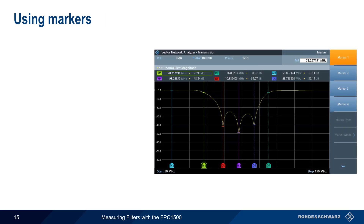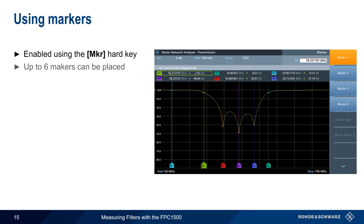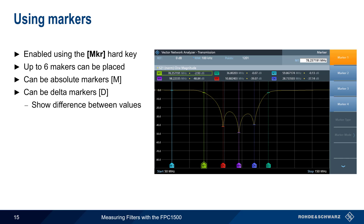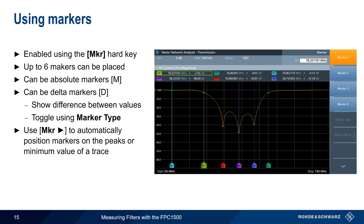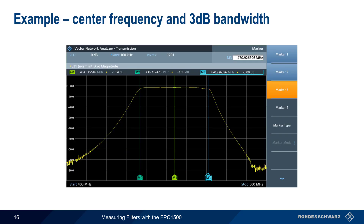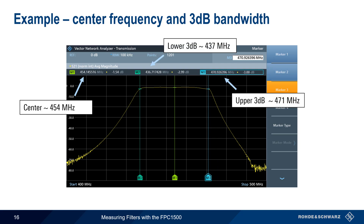Filter characteristics are determined using markers, which are enabled using the Marker hard key. Up to six markers can be placed on a trace, and these can be either absolute markers or delta markers, which show the difference between marker values. This can be toggled using the Marker Type key. Another Marker hard key is used to automatically place markers on the peak or minimum values of the displayed trace. We've placed three markers: one on the center frequency of our bandpass filter, here approximately 454 MHz, and one each on the lower and upper 3 dB points, which is how filter pass band is normally specified. Looking at the difference between these two 3 dB points, we can calculate the pass band as being approximately 34 MHz.